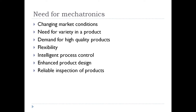Reliable inspection of products: automatic inspection is always better than manual inspection. With mechatronics, automation in the inspection line is possible, and with improved inspection techniques the manufacturer can ensure that only the best product reaches the customer. Increase in production rate: with the implementation of mechatronics in the production line, the rate of production can be increased.